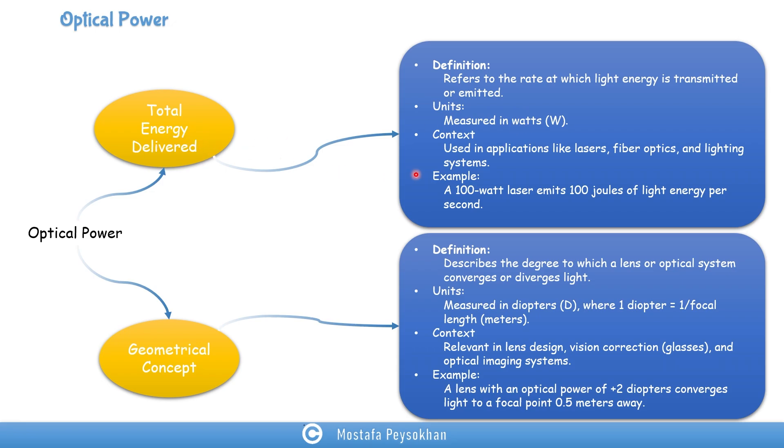And the context, we're going to use it for applications like lasers, fiber optics, illumination systems. For example, we can say a 100 watt laser emits 100 joules of light energy per second.